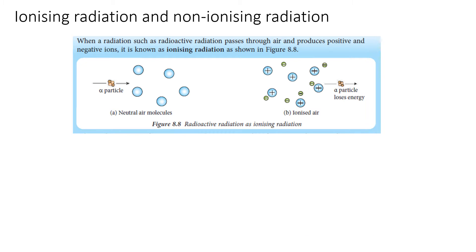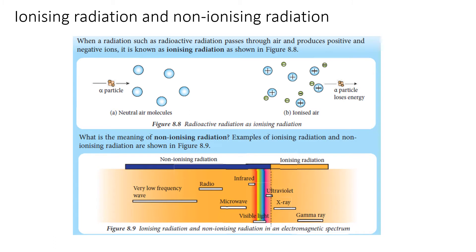Let's look at another figure. What is non-ionizing radiation? Non-ionizing radiation refers to any type of electromagnetic radiation that does not carry enough energy to ionize an atom or molecule. An example of ionizing and non-ionizing radiation can be seen in Figure 8.9, the electromagnetic spectrum. On the left-hand side, there is non-ionizing radiation: radio, infrared, microwave, visible light, and ultraviolet.